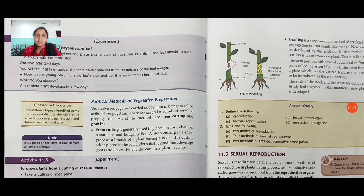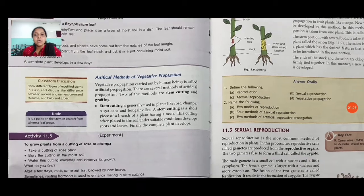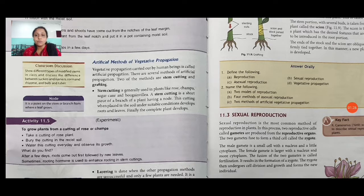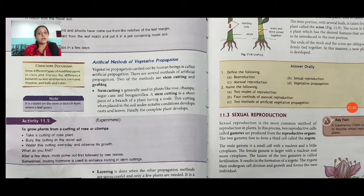This process is done by human beings, so it is called an artificial method. In activity 11.5, to grow plants from a cutting of rose or champa, take a cutting of the rose plant, bury the cutting in moist soil, water it every day and observe its growth. After a few days roots come out first, followed by new leaves. Sometimes rooting hormone is used to enhance rooting in stem cutting.